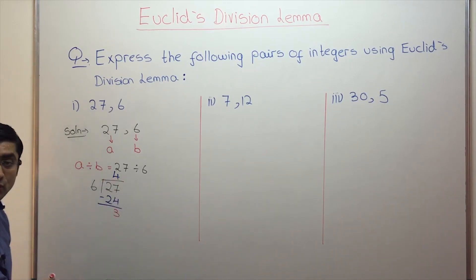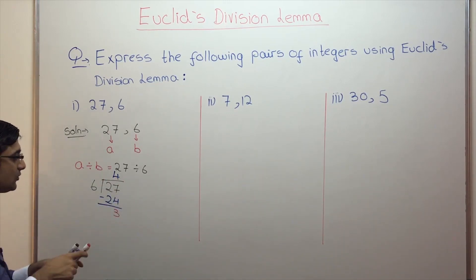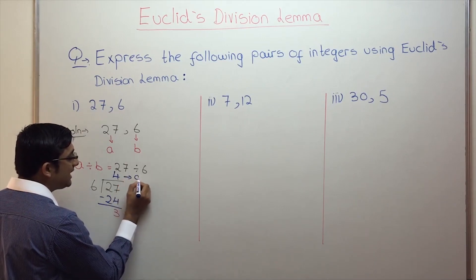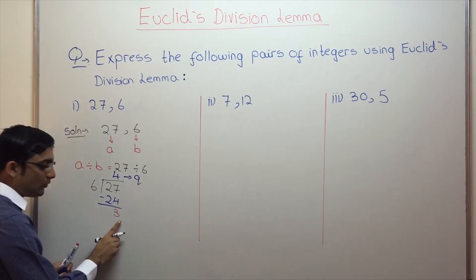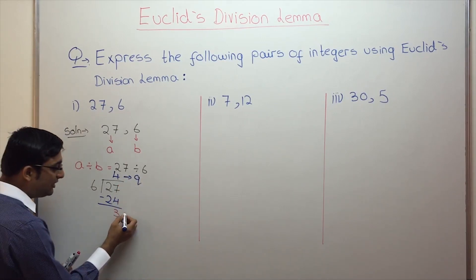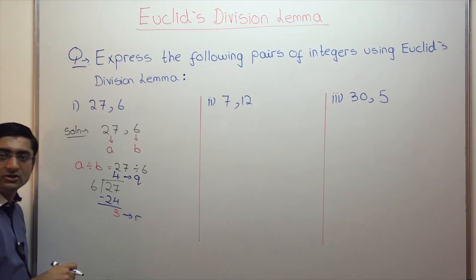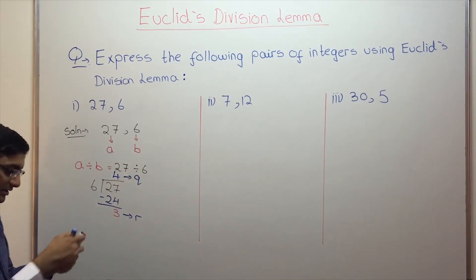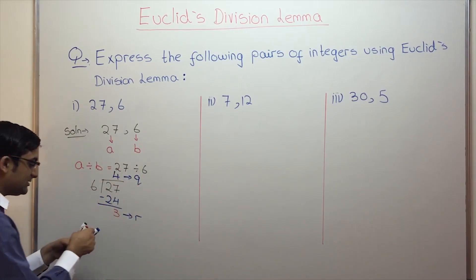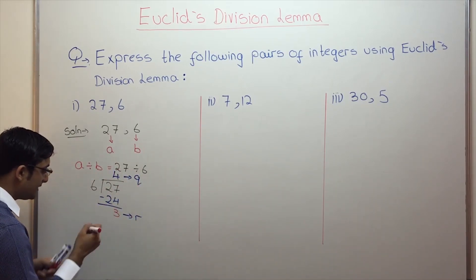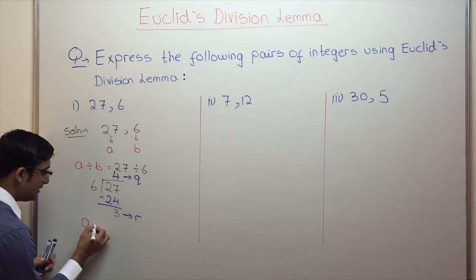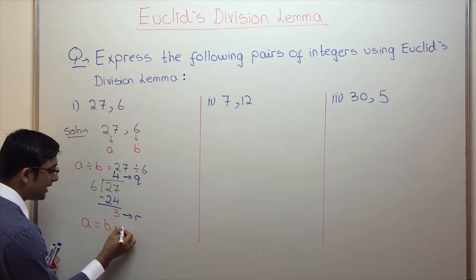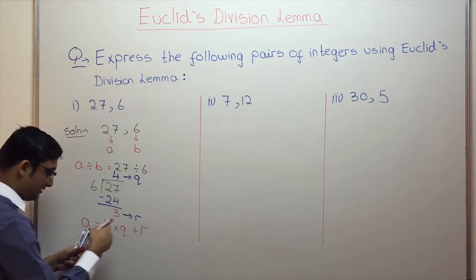Any more digits left? No. So what is the quotient? 4 is the quotient — label this as Q. What is the remainder? 3 — label it as R. So we have all four values A, B, Q, and R. Then write down Euclid's division lemma: A is equal to B multiplied by Q plus R.